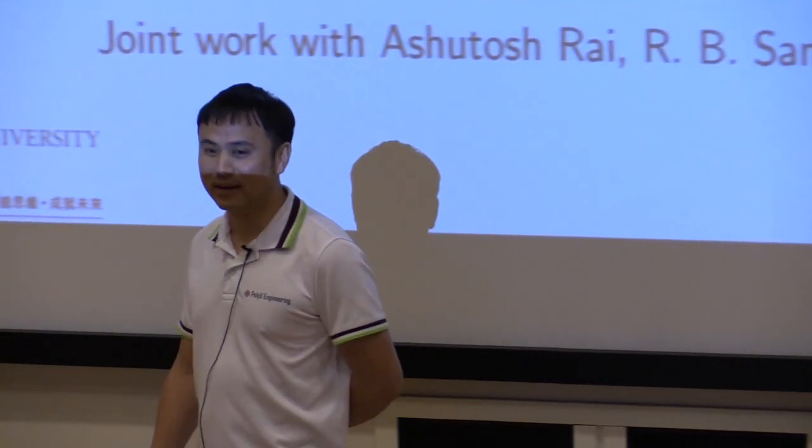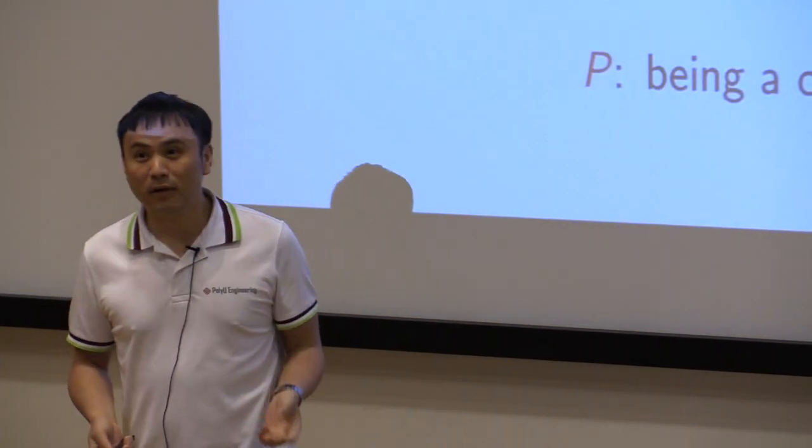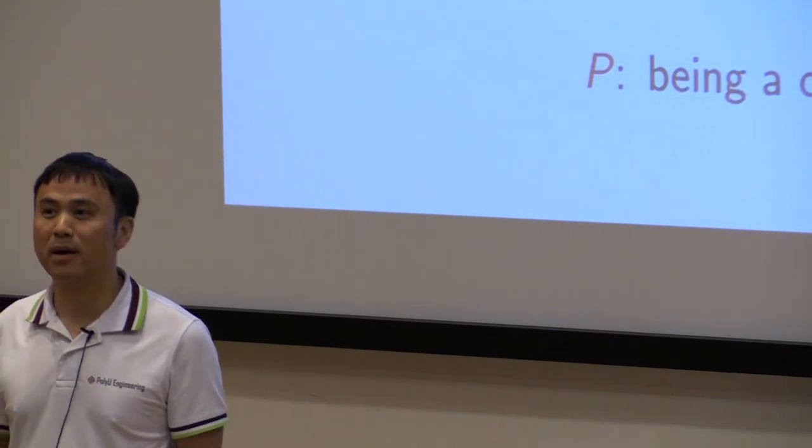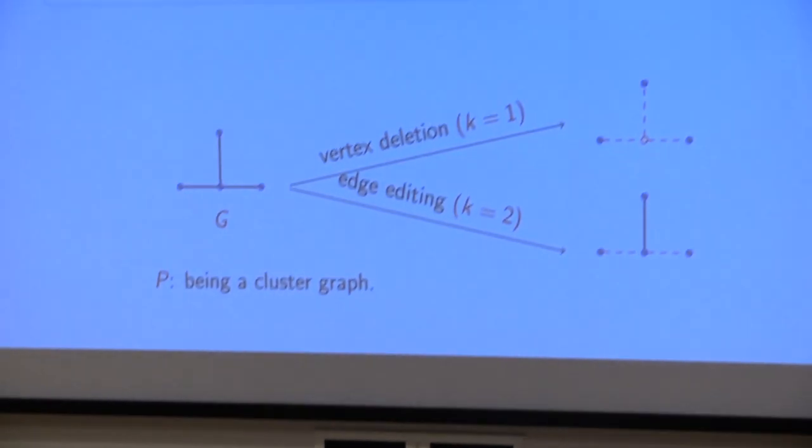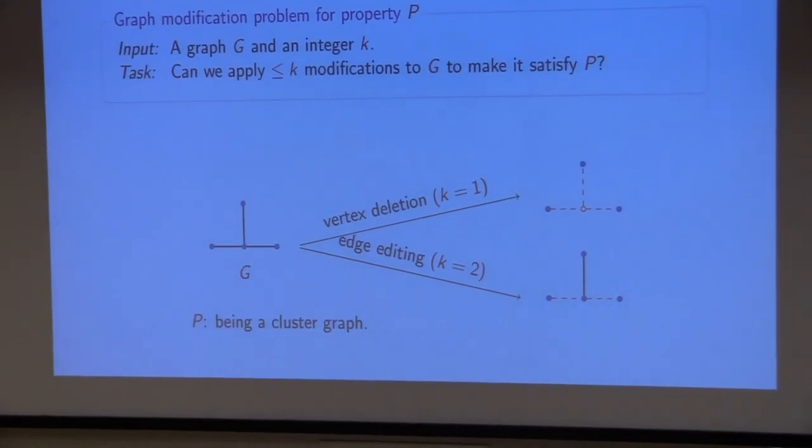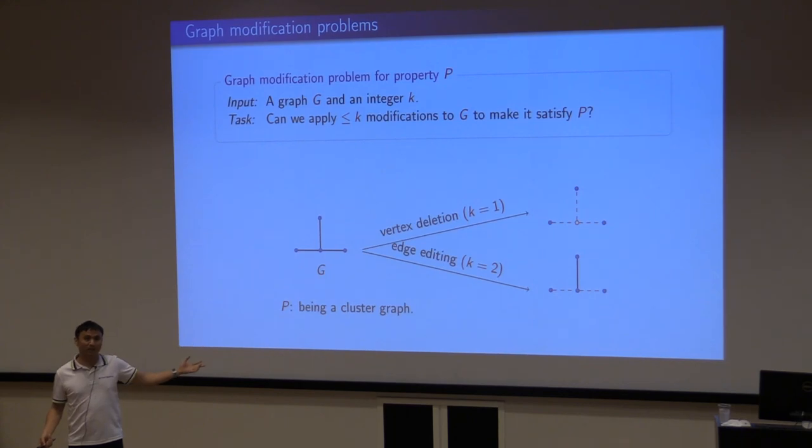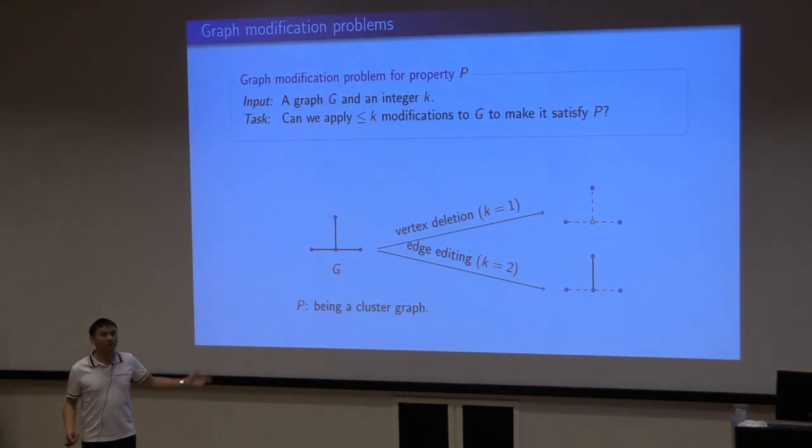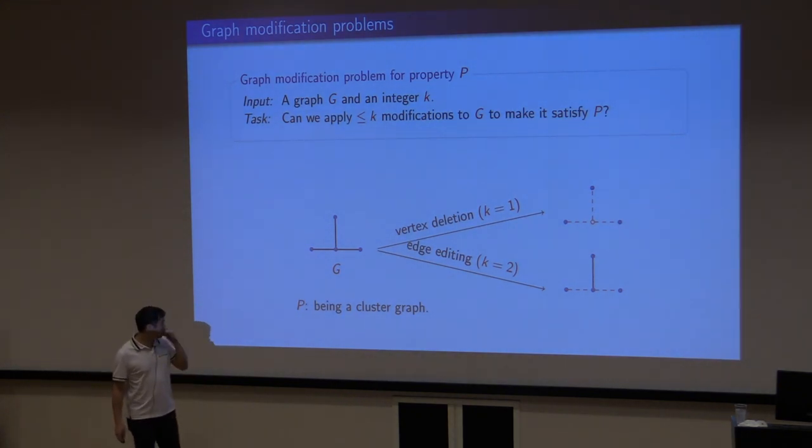I'm going to talk about the diamond-free editing kernel. I guess everybody knows graph modification problems. You are given a graph and a budget k. You do some modification to the graph to make it satisfy some property. For example, if the property is to be a cluster graph, that is, every component is a clique, then you can delete one vertex from this graph or you can delete two edges.